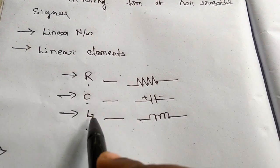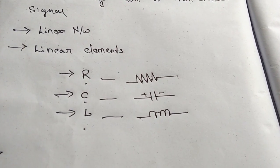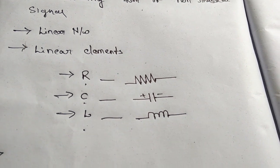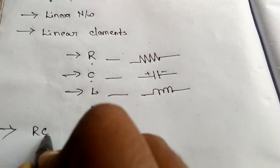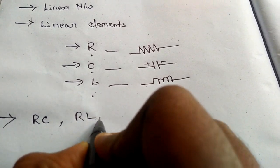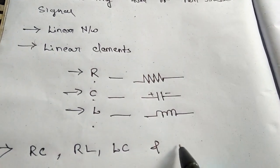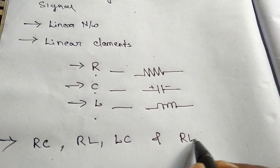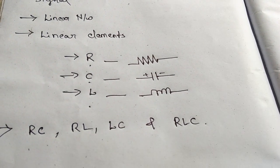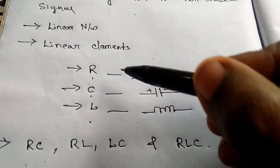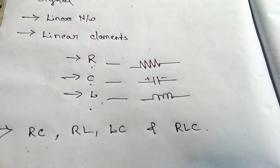By using these three components, we can form four combinations. Those are the RC Combination, RL Combination, LC Combination, and also the RLC Combination. These are the four combinations we have by using Resistor, Capacitor, and Inductor.